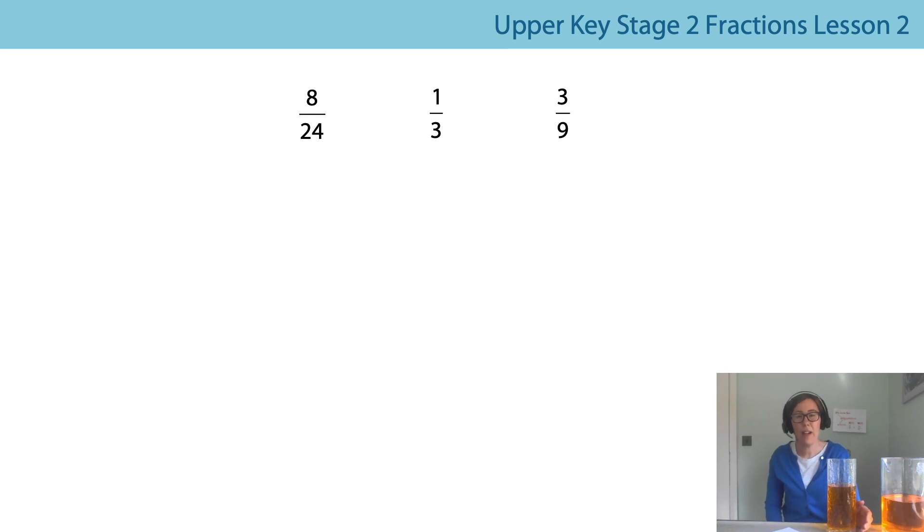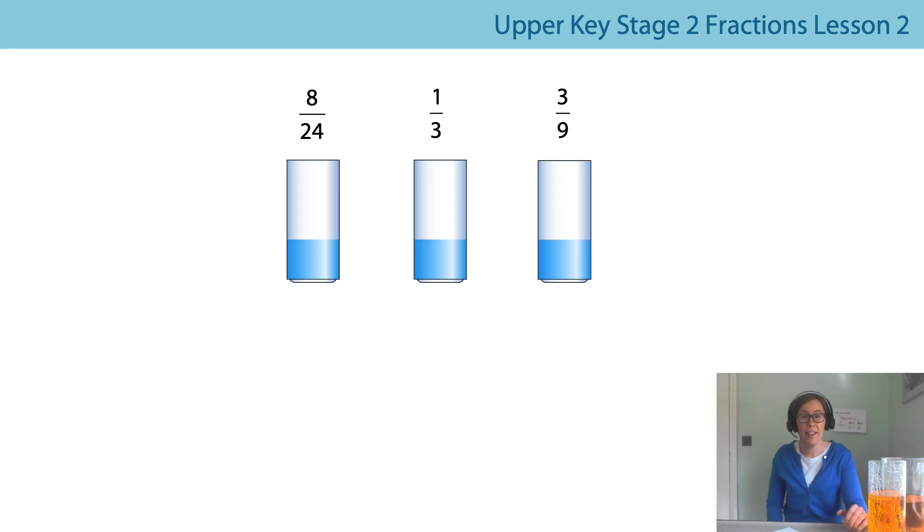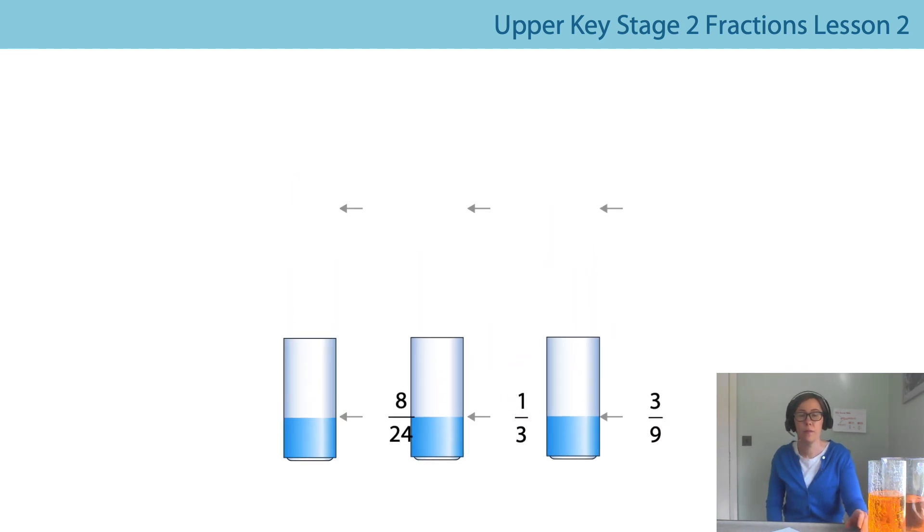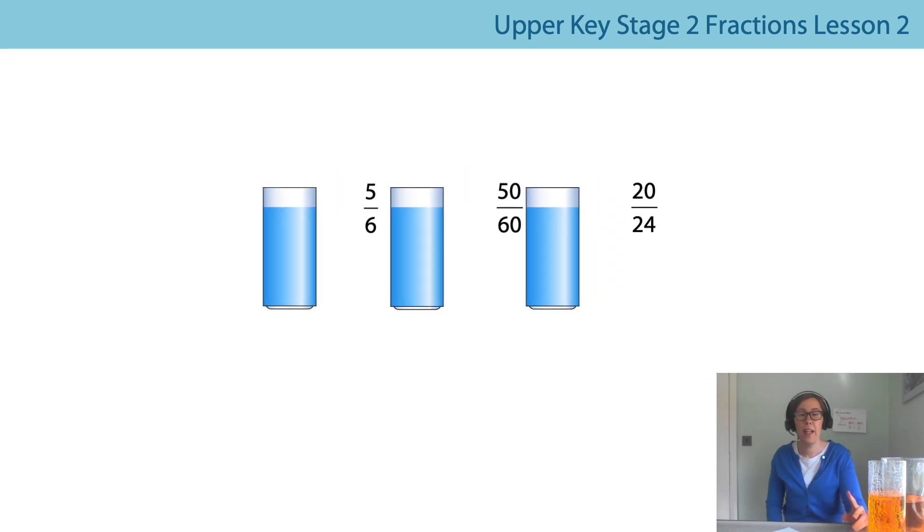We're now going to look at some other fractions that are the same in size as one third. Since we've just measured out one third, we know what that looks like in size in a water container. So eight twenty-fourths and three ninths are also the same size as one third. Can you see a pattern there? Can you notice anything as to why it might be? It might be easier to see on one more than the other, but don't worry if you don't see the connection because next lesson is all about that. Here's our container again showing one third and then the other fractions that are the same in size as one third.